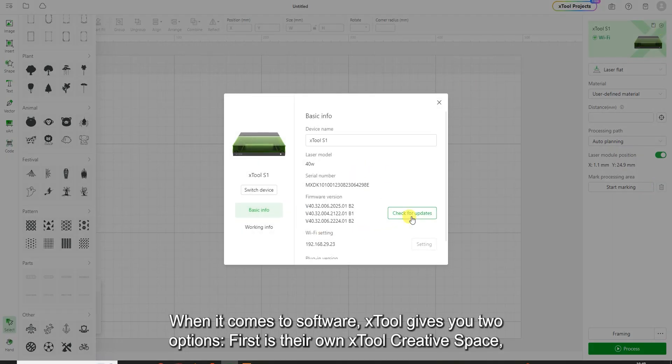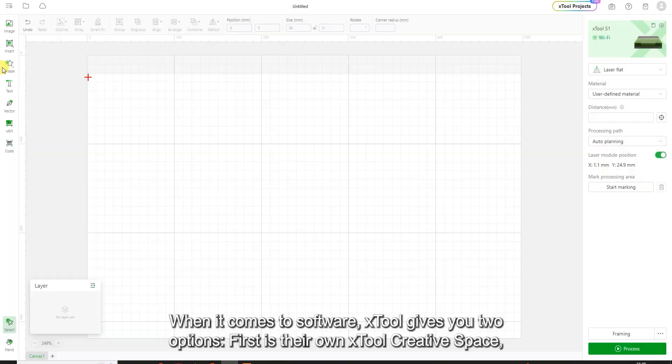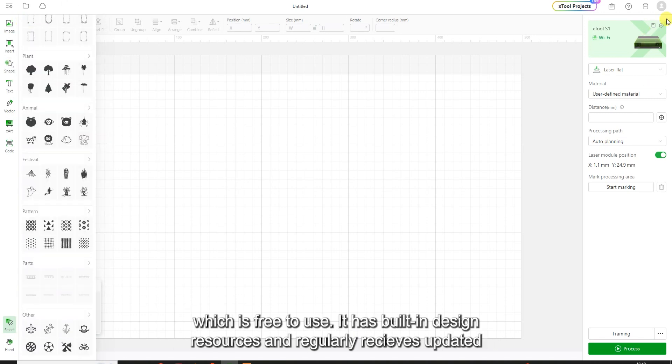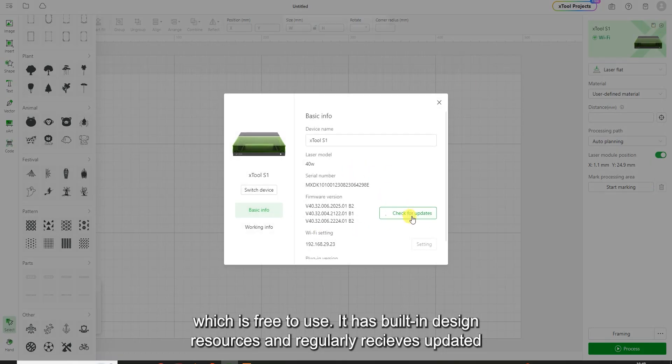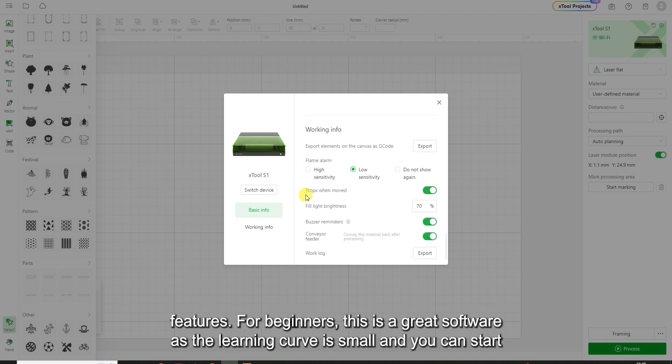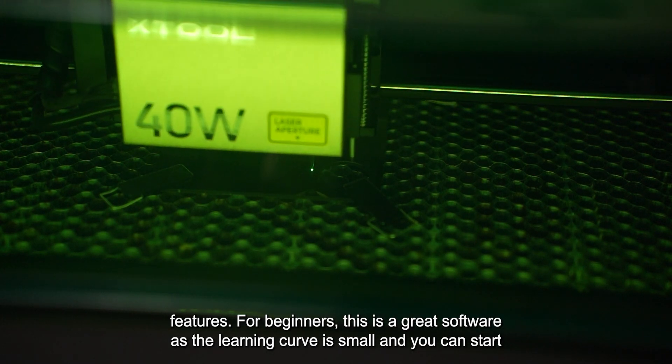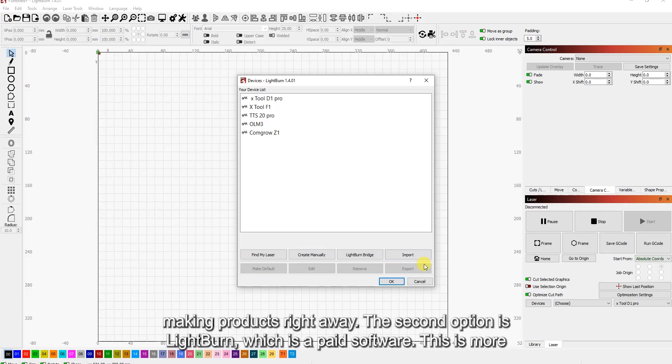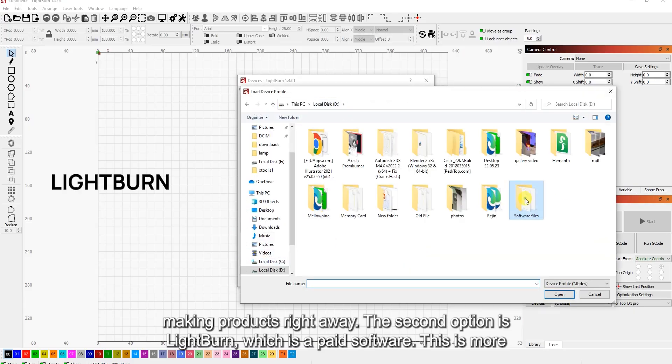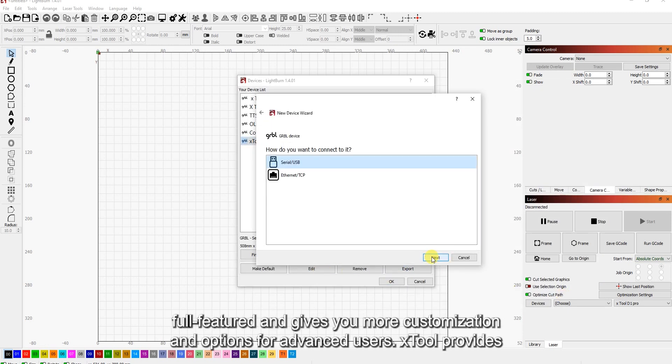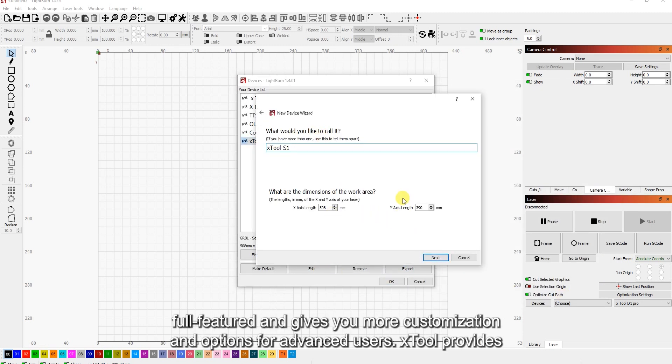When it comes to software, Xtool gives you two options. First is their own Xtool Creative Space, which is free to use. It has built-in design resources and regularly receives updated features. For beginners, this is a great software as the learning curve is small and you can start making products right away. The second option is Lightburn, which is a paid software. This is more full-featured and gives you more customization and options for advanced users.